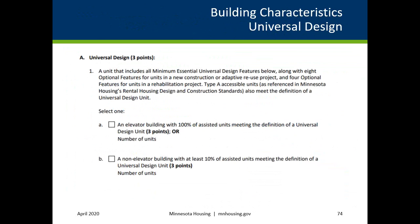For scattered site or multiple building projects, projects with both building types must meet both definitions in order to be eligible. For example, the elevator building would need to meet the elevator building threshold, and the non-elevator building would need to meet the non-elevator building threshold.